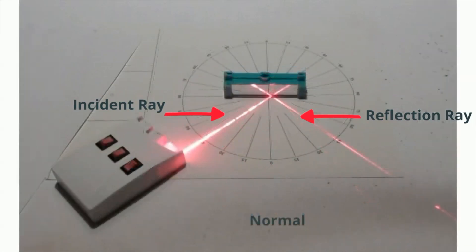Here's another example. Normal is zero, and incident and reflection are at 45.